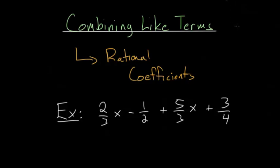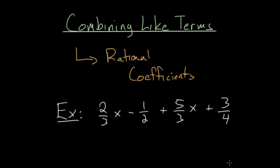For this video, I'd like to further the discussion on combining like terms, but specifically with rational coefficients. Remember that the coefficient is the number multiplied by x — in this case, two-thirds. So now our coefficients are going to be either fractions or decimals. Just like the previous video, we're going to look for terms with the same variable or terms with all constants.